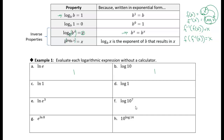What power do we raise E to in order to get 1? It's going to be 0. You can recognize that the natural log of 1 — the log of 1 in any base — equals 0. The common logarithm (base 10) of 1 asks what power of 10 gives 1, and that's also 0.